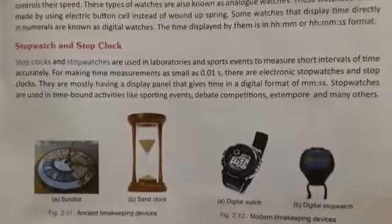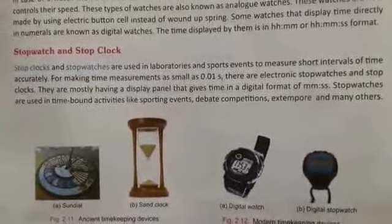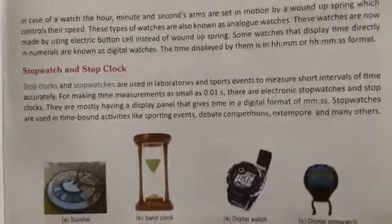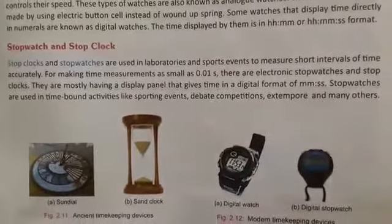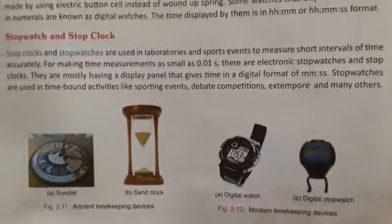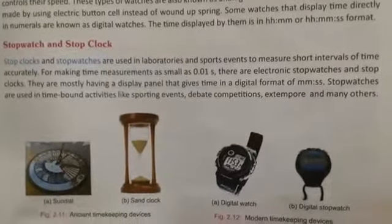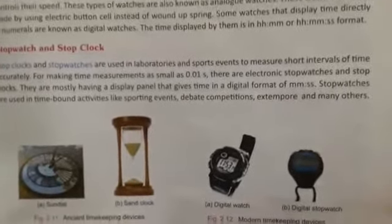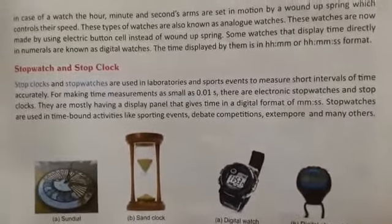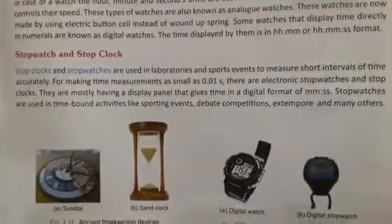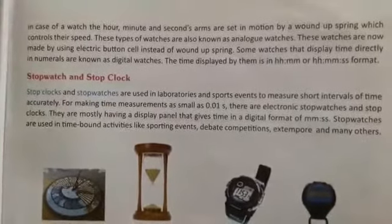Stop clocks and stopwatches are used in laboratories and sports events to measure short intervals of time accurately, for making time measurements as small as 0.01 second. There are electronic stopwatches and stop clocks. They mostly have a display panel that gives time in a digital format of minute and second. Stopwatches are used in time bound activities like sporting events, debates, competitions, extempore, and many other activities.